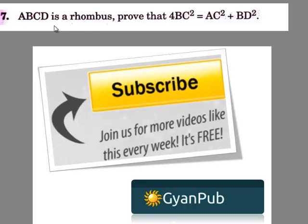Moving on to the 7th question: ABCD is a rhombus, prove that 4BC² = AC² + BD².